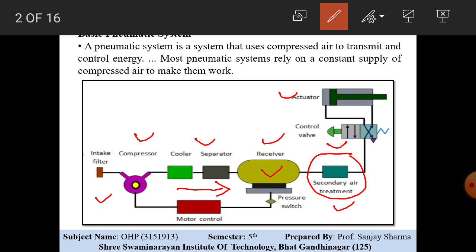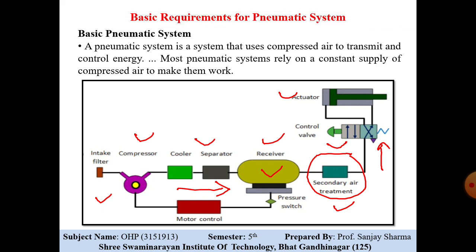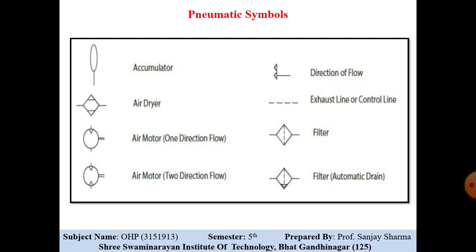This is the filter-regulator unit. The air passes through the control valve, and from the control valve it is supplied to the actuator. The actuator performs the required work. Now let us see the different pneumatic symbols.